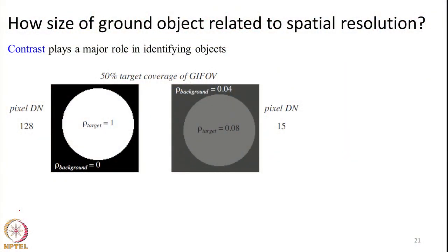I already explained clearly that contrast plays a major role in identifying an object. This gives a very good example where the reflectance of the background is 0 and the target is 1. Here the background reflectance is 0.04 and the target reflectance is 0.08. Assuming both cover 50% each of the GIFOV.